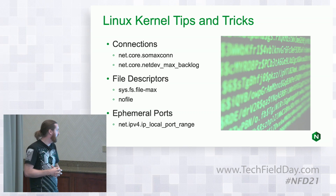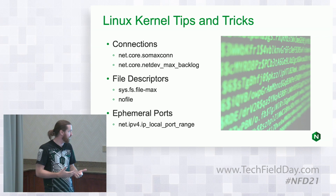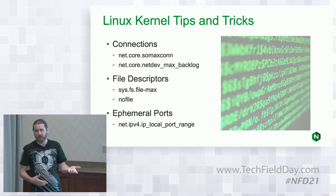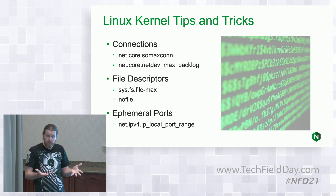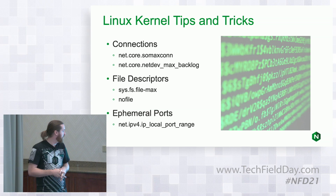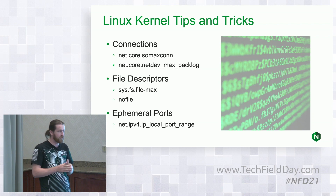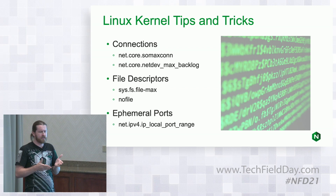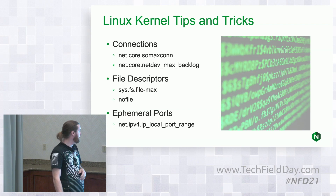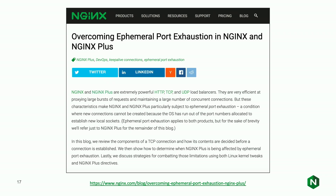Nginx as a reverse proxy opens two file descriptors for every connection — one for the client and one for the upstream. It's also susceptible to ephemeral port exhaustion at high load because it opens lots of connections. You can increase that port range from the Linux OS to get a wider range — the default is something in the 30,000 to 50,000-something range, and you can greatly increase that. There's also advanced Nginx configuration to help with this — there's a blog on the Nginx website with good information on tuning.